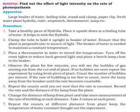If there are uncountable bubbles going too fast, move the lamp a little bit away to decrease the light intensity, which will decrease the bubble rate. Count the number of bubbles per minute. Repeat the counts until you are sure the rate is constant — for example, 10 bubbles per minute. Record the rate and the distance of the lamp from the plant.